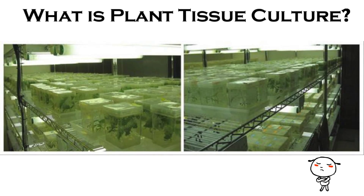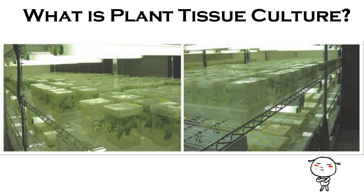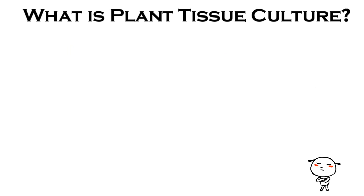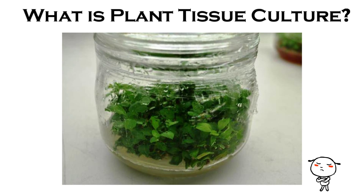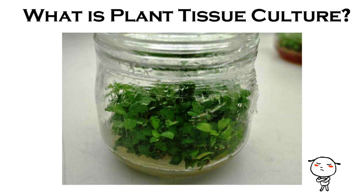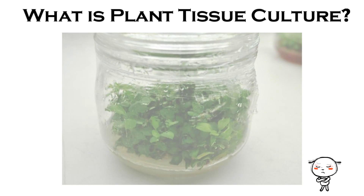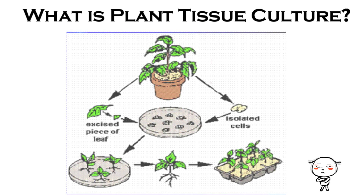Plant tissue culture is the culture and maintenance of plant cells or organs in sterile, nutritionally and environmentally supportive conditions. It has applications in research and commerce. In commercial settings, tissue culture is primarily used for plant propagation and is often referred to as micropropagation.